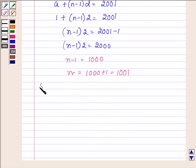Now, we have to find the sum of n terms. So in all, we have 1001 terms from 1 to 2001, and sum of n terms is given by n upon 2, 2a plus n minus 1 into d.